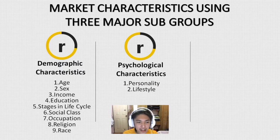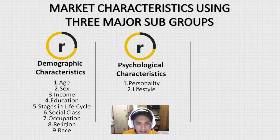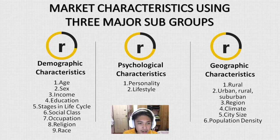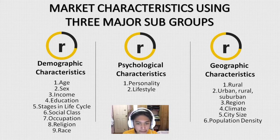Next up is psychological characteristics: personality and lifestyle. For example, if you determine that your product appeals to people who are physically fit, you can promote an aspect of your product that encourages fitness. Third is geographic characteristics: rural, urban, suburban, region, climate, city size, and population density. For example, if you operate your business in a warm area but your product appeals to those who live in colder climates, you'll have to decide whether it's better to relocate to that area or perhaps offer your products by direct mail or the internet.